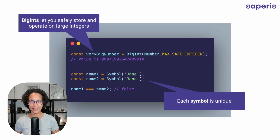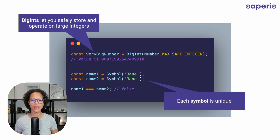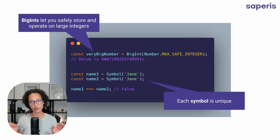BigInt is the second last data type. You use it so that you can safely store and operate on large integers. That's because with the data type of numbers, at a certain point it doesn't work well with very large numbers. Then the last data type is Symbol. We have 'nameOne' and 'nameTwo', and we each apply a symbol and pass the value of 'Jane' into it — creating two separate symbols. Now if we compare them, Jane and Jane looks the same to us humans, but since these are symbols, they're not. Symbols are always unique.